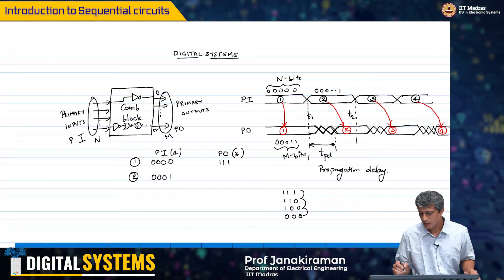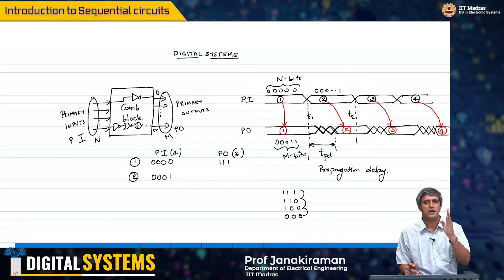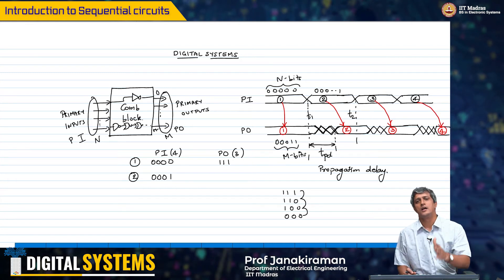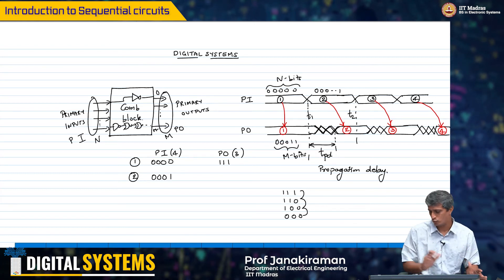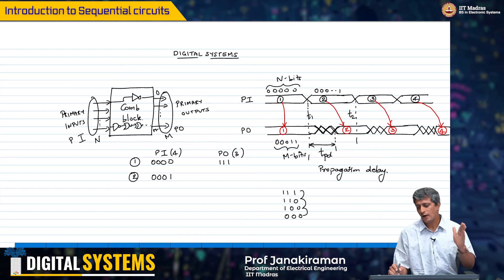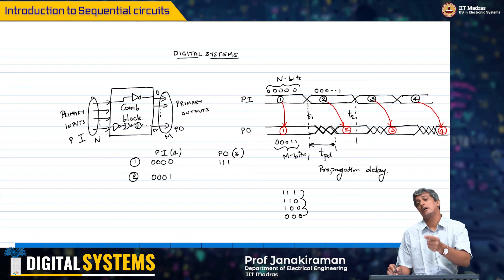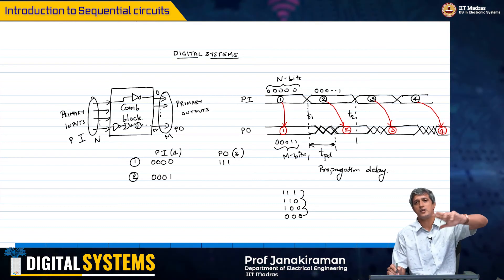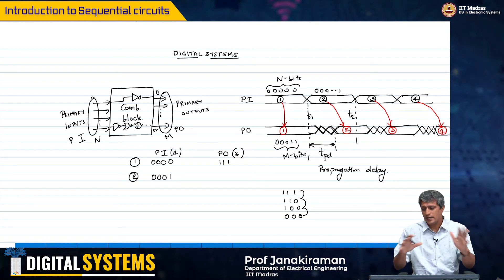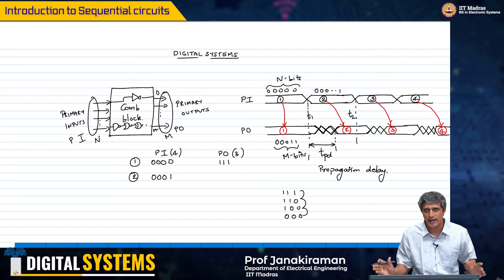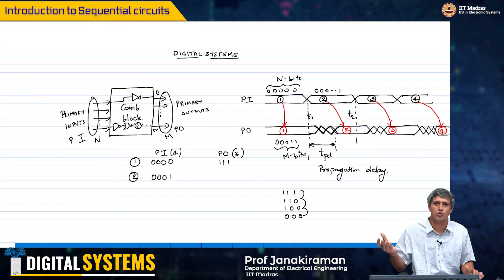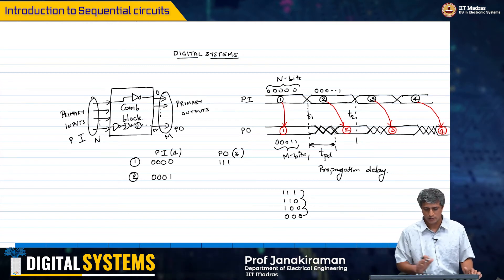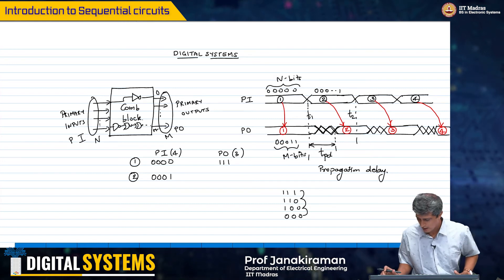So if you wait for TPD, the output will stabilize to its final value. Likewise, when the input again changes at T2, you will start seeing changes and after the propagation delay it will again settle to the output corresponding to state 3, whatever that input is.